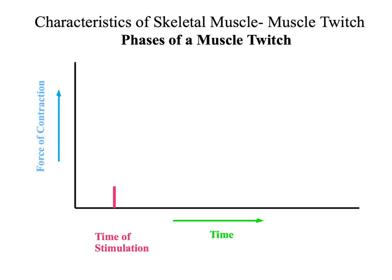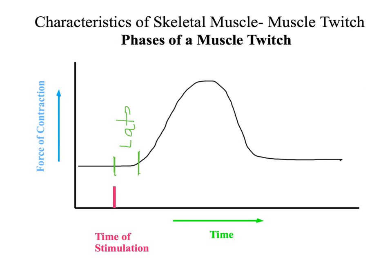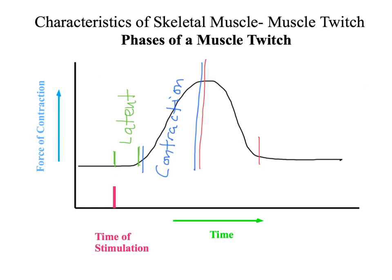When we look at a muscle twitch, at some point the muscle will be stimulated and a contraction will occur. The first phase of a muscle twitch — between the time of stimulation and the contraction — is called the lag phase or latent phase. The second phase is where the muscle shortens in length; this is called the contraction phase. The last phase is where the muscle is no longer contracting; we call this the relaxation phase.